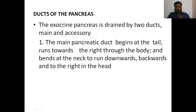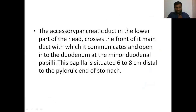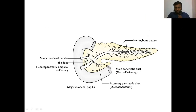Now we go to the duct of the pancreas - another important heading. The pancreas has two ducts: one is the main pancreatic duct and the other is the accessory pancreatic duct. Looking at this image, the main pancreatic duct begins at the tail of the pancreas.